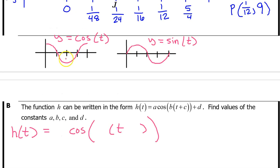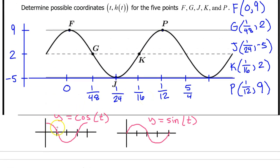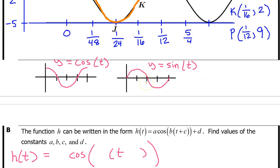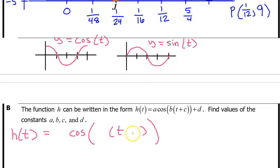We have memorized that one period of the parent function y equals cosine t looks like this. And one period of the parent function y equals sine t looks like this. Since h(t) is a transformation of the cosine function, let's trace one period of the parent function onto the graph of h(t). Let's write an equation for h(t) based on this period of the graph, filling in the values of a, b, c, and d as we go along.